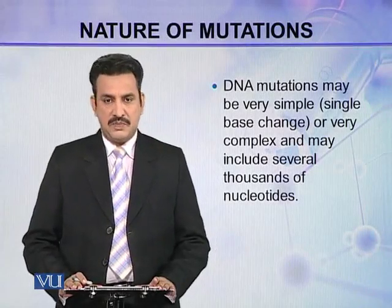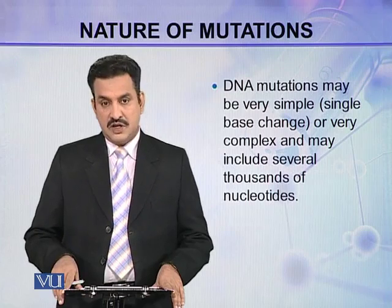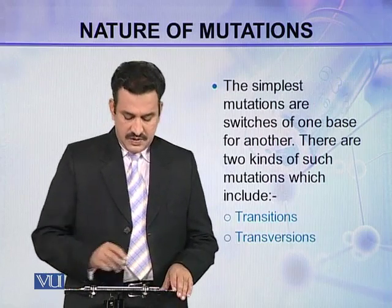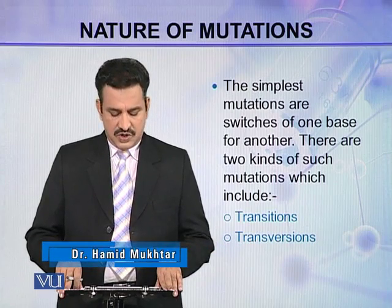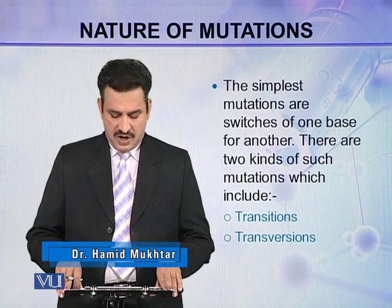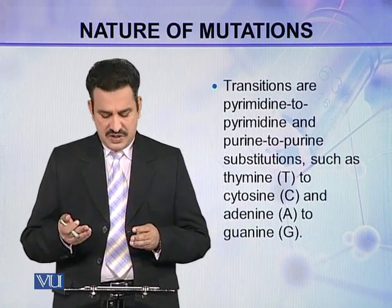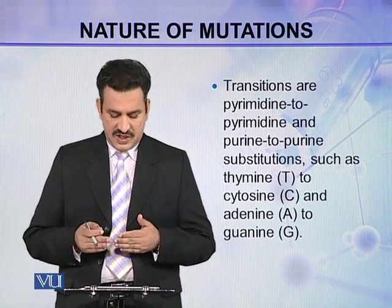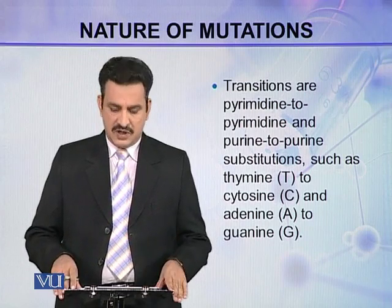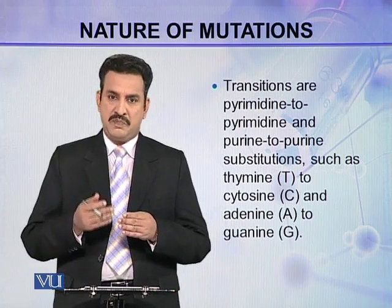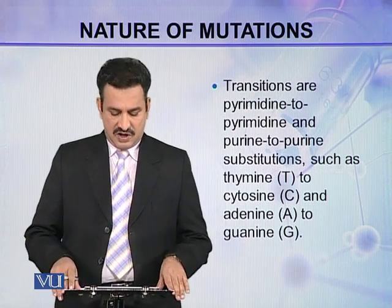DNA mutations may be very simple and may include a single base change, or they may be very complex and may include several thousands of nucleotides. The simplest mutations are switches of one base for another. There are two kinds of such mutations: transitions and transversions. Transitions are pyrimidine-to-pyrimidine and purine-to-purine substitutions, such as thymine to cytosine — both are pyrimidines — and adenine to guanine — both are purines. Such changes are called transitions.